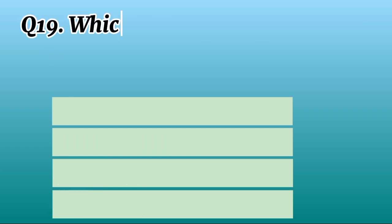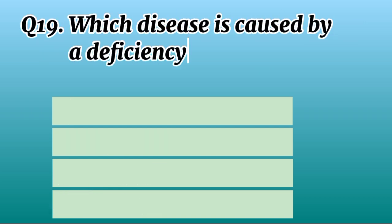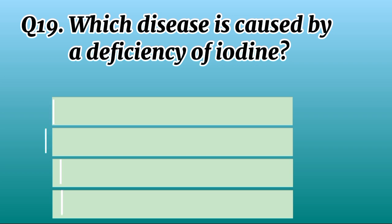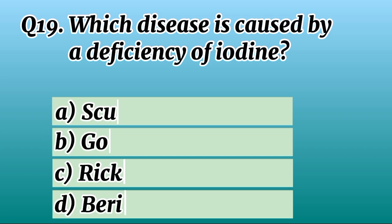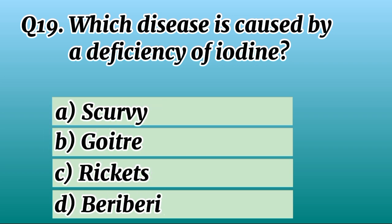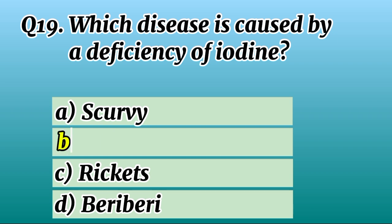Question 19. Which disease is caused by a deficiency of iodine? Correct option B: Goiter.